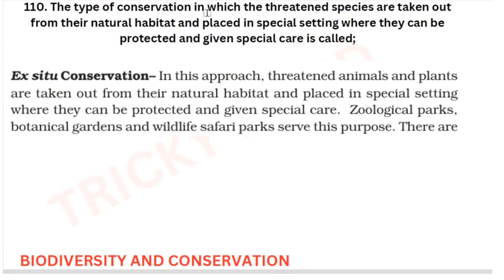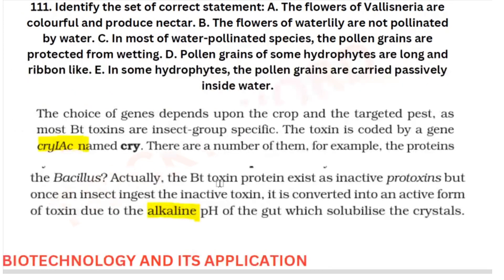The type of conservation in which the threatened species are taken out from their natural habitat and placed in a special setting where they can be protected and given special care is called ex-situ conservation. This is also a direct question — threatened animals and plants are taken out from their habitat and placed in a special setting. This is from your biodiversity and conservation chapter.